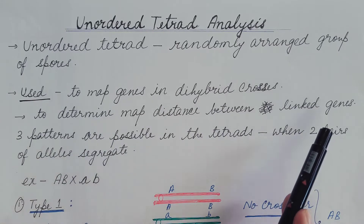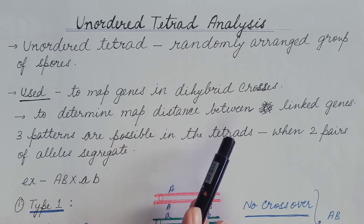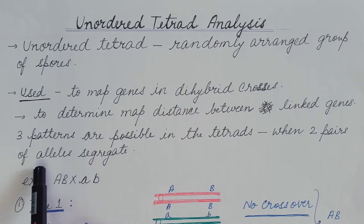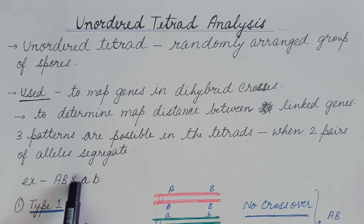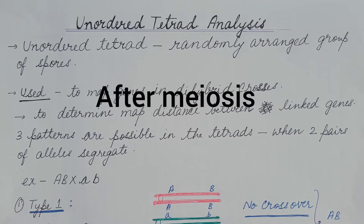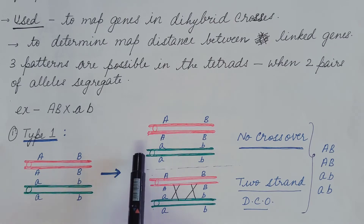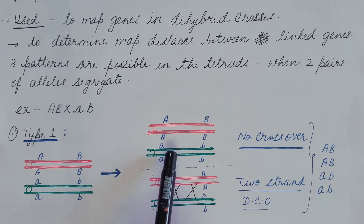Through unordered tetrad analysis we can determine if two genes are linked or if they assort independently, and if they are linked, we can determine the map distance between them. Three patterns are possible in the tetrads when two pairs of alleles segregate. For example, in a cross between capital AB and small ab — a dihybrid cross — three types of tetrads are possible.